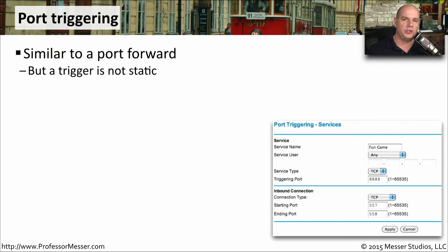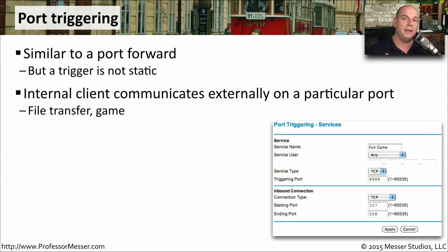Let's say that you'd like the functionality of a port forward, but you don't want to have this configured 24 hours a day, seven days a week. In that case, we might want to consider using a port trigger. This is similar to a port forward, but it's only going to be active under a certain circumstance — for example, you may enable this configuration when you start up a game or perform a file transfer. While that game is running or that file transfer is taking place, this port trigger will be in use. If that game is no longer operating, the port trigger is removed from your router, and no one's able to access your internal network.